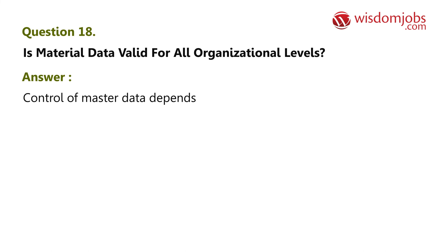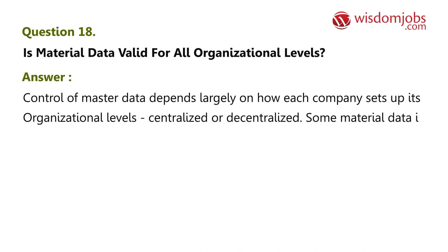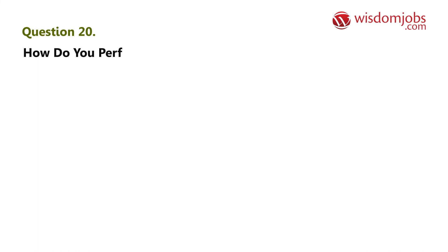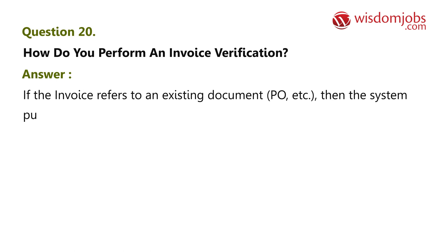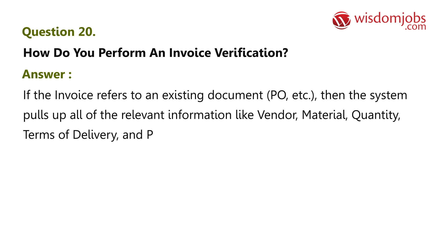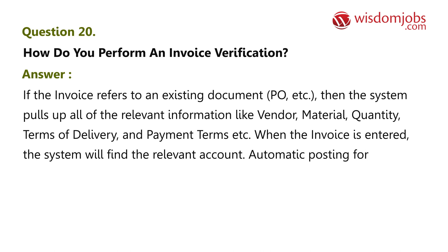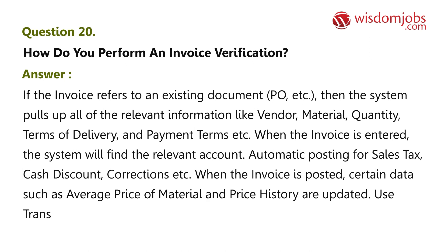Question 20: How do you perform an invoice verification? Answer: If the invoice refers to an existing document such as a PO, the system pulls up all of the relevant information like vendor, material, quantity, terms of delivery, and payment terms. When the invoice is entered, the system will find the relevant account and perform automatic posting for sales tax, cash discount, corrections, etc. When the invoice is posted, certain data such as average price of material and price history are updated. Use transaction MIRO.